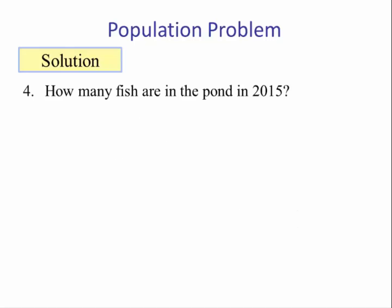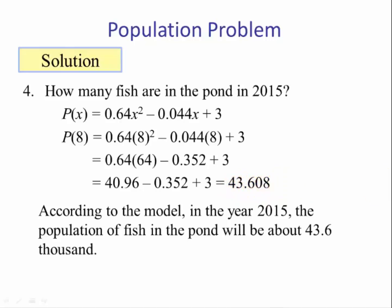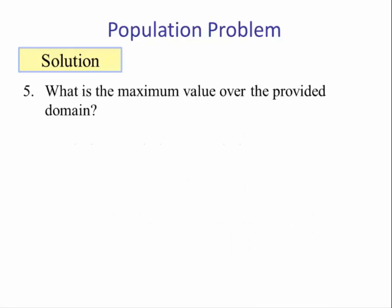Number four: how many fish are in the pond in 2015? This corresponds to 8 years beyond 2007, so that means x is 8. Substituting 8 into the model, we have the output of 43.608. So we'd say according to the model, in the year 2015, the population of fish in the pond will be about 43,600.